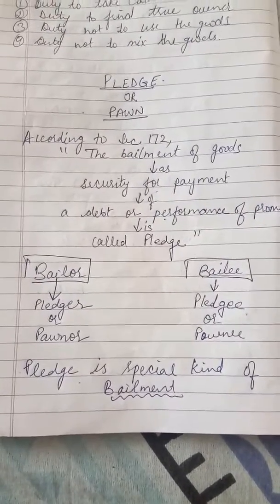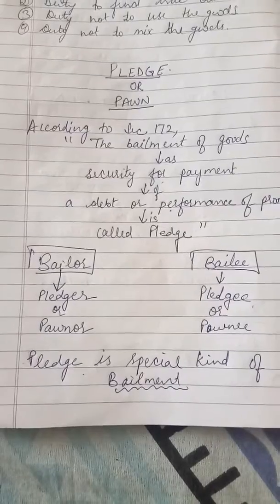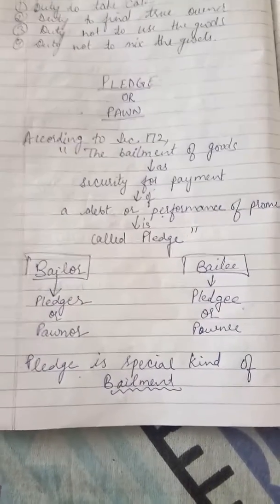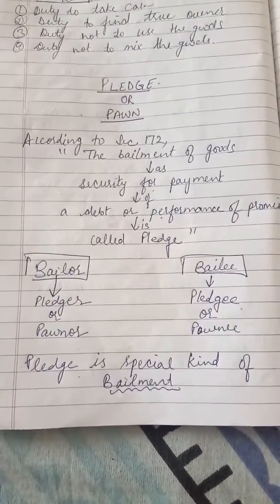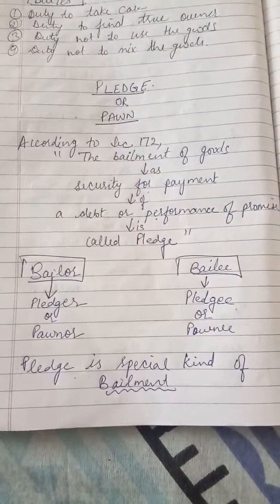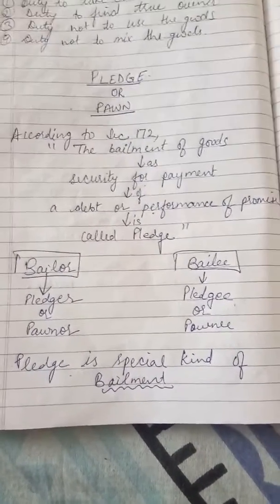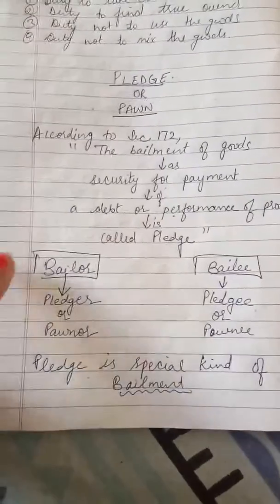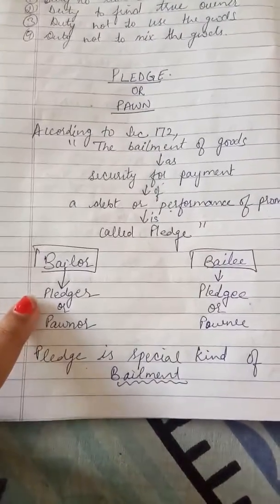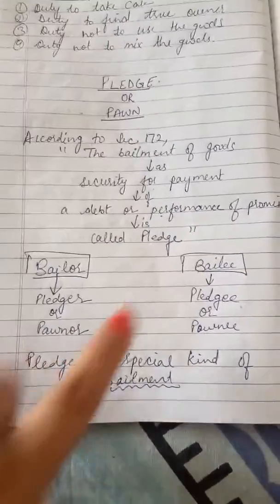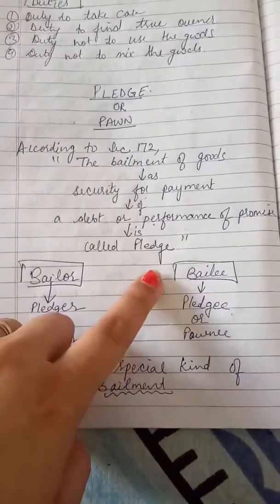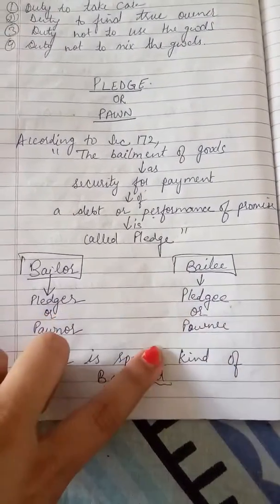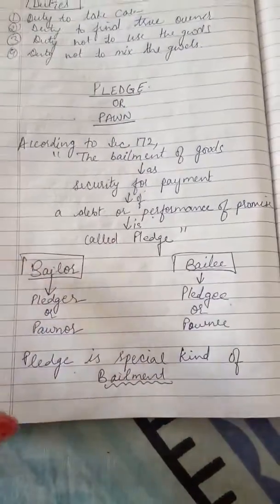जिस तरीके से bailment के contract में दो parties होती हैं - bailer और bailee - उसी तरीके से pledge में भी दो parties involved होती हैं. Bailer को यहाँ pledger और pawnor कहते हैं, और bailee को pledgee और pawnee कहते हैं.